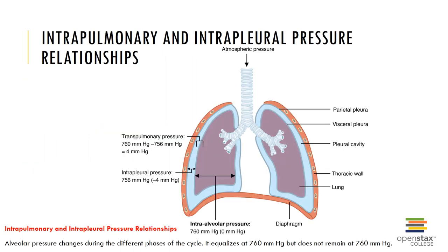Here we can see the intrapulmonary and intrapleural pressure relationship. Alveolar pressure changes during the different phases of the cycle, and you can see the intrapleural pressure, the transpulmonary pressure, and the intraalveolar pressure.